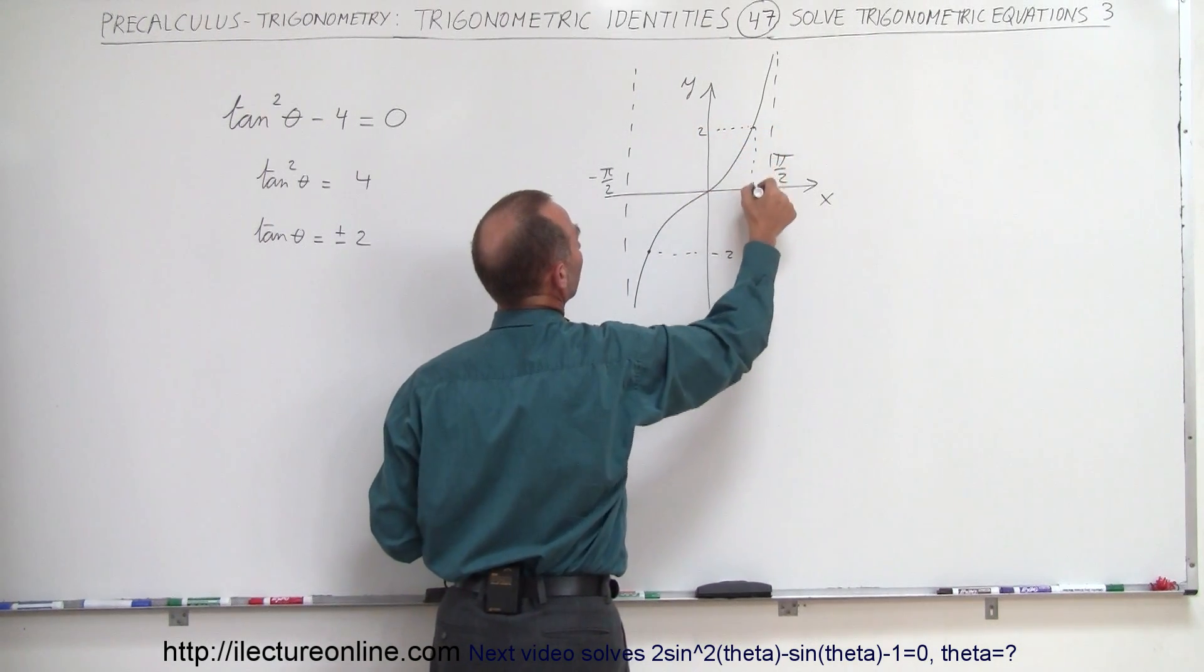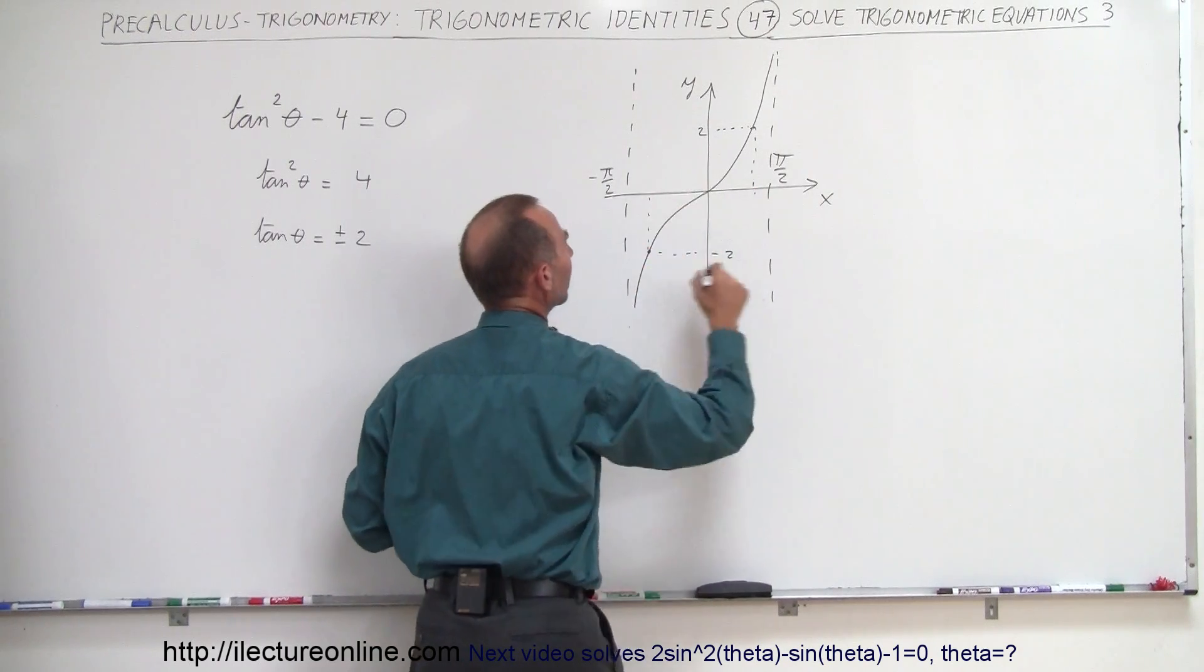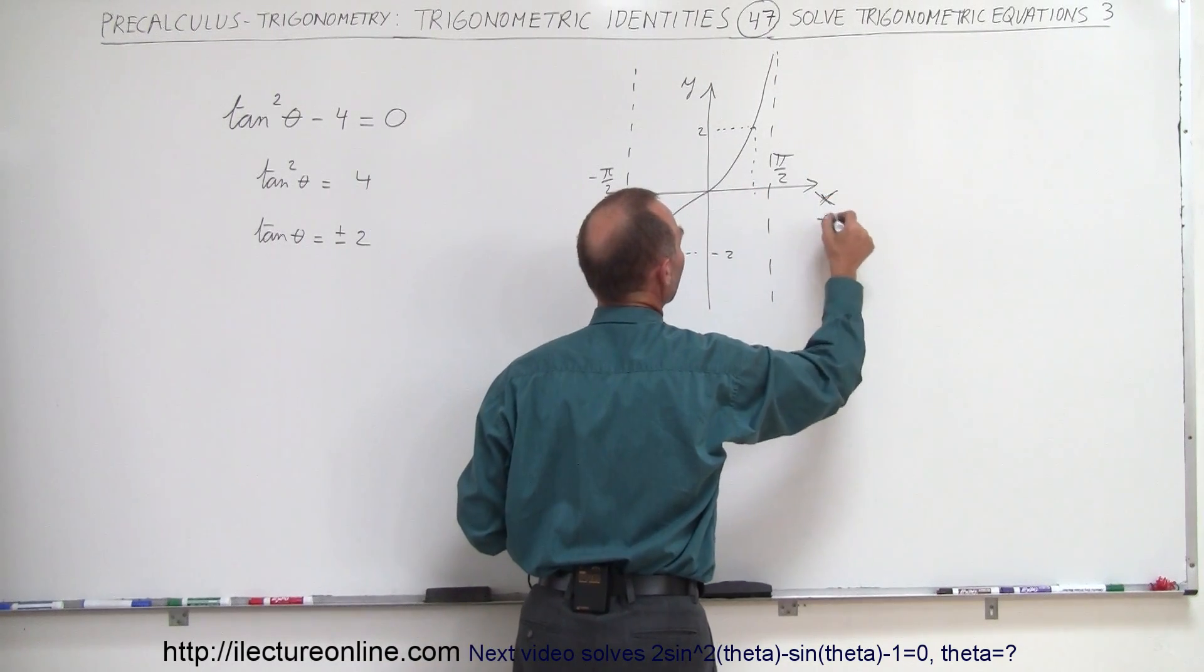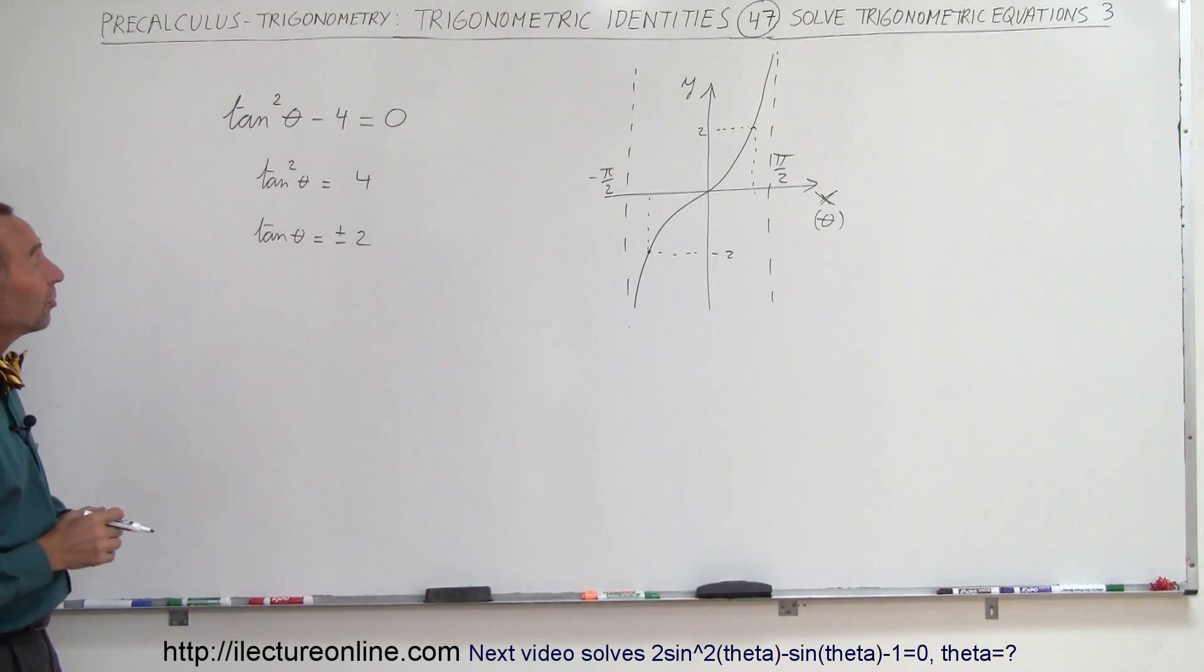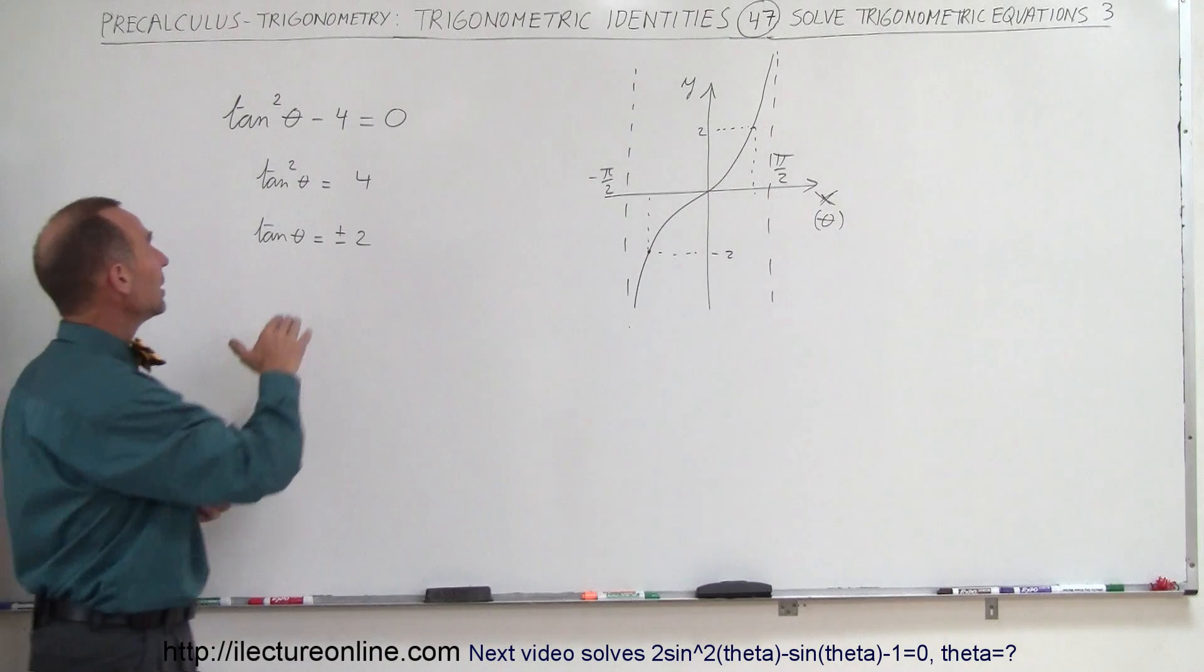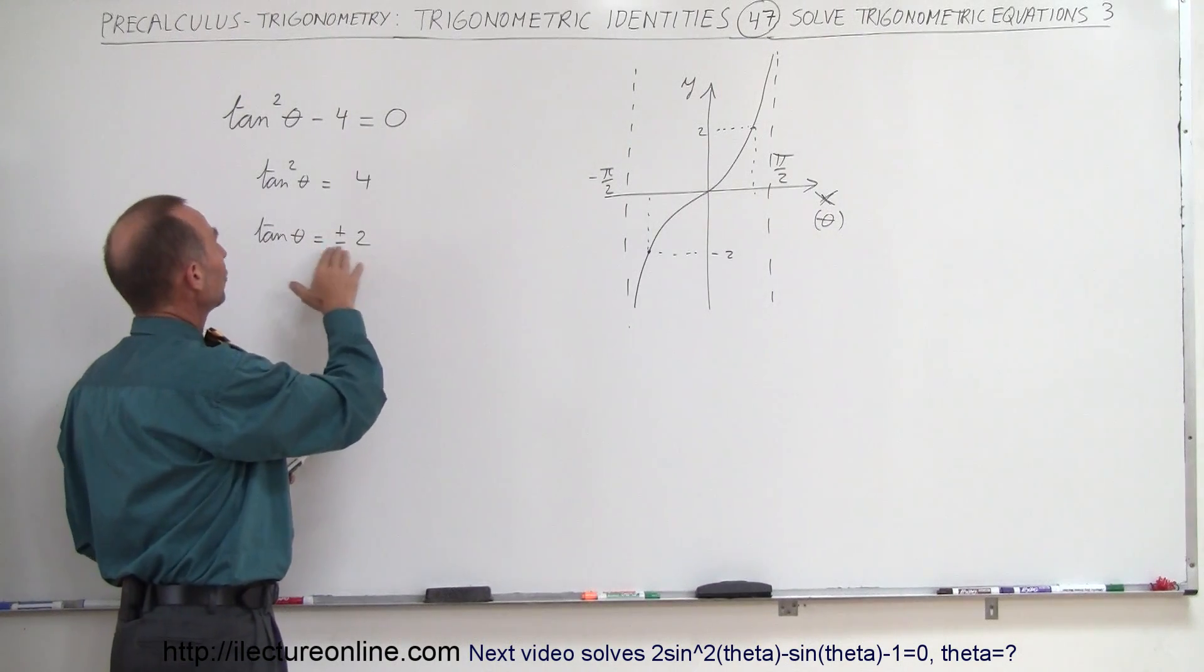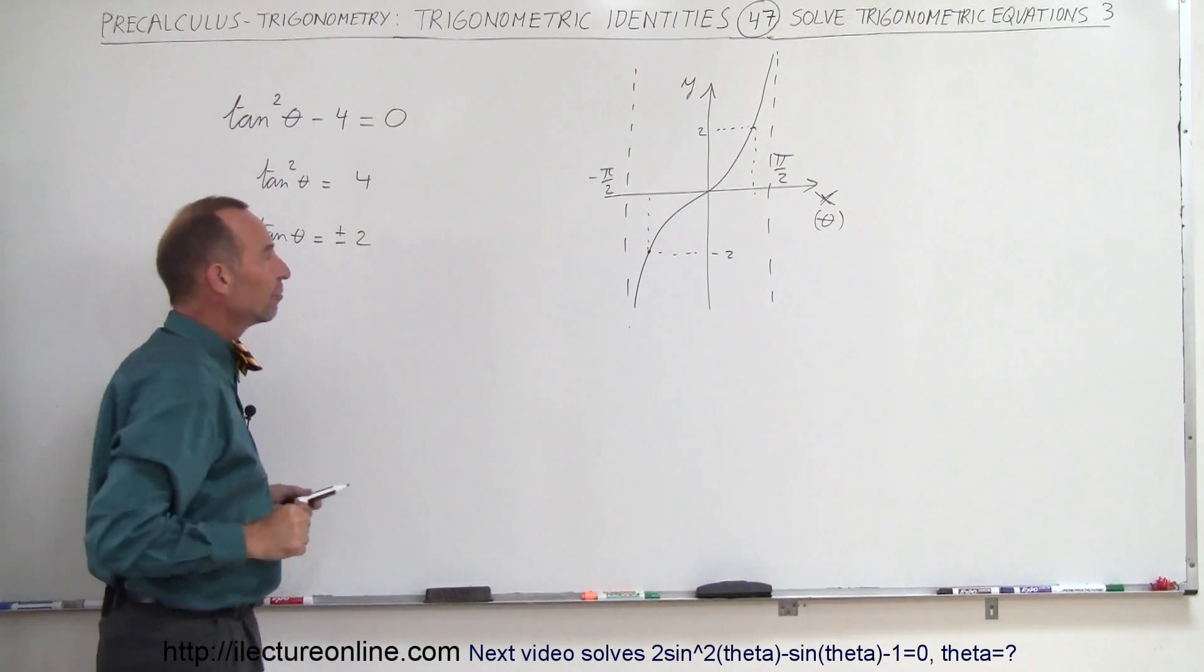And so we're looking for the values of the angle. In this case, instead of x, we use the angle theta. So that's kind of the way you want to look at it. So that means there's two possible values. One for the tangent of the angle being positive 2 and the other for the tangent of theta being negative 2.